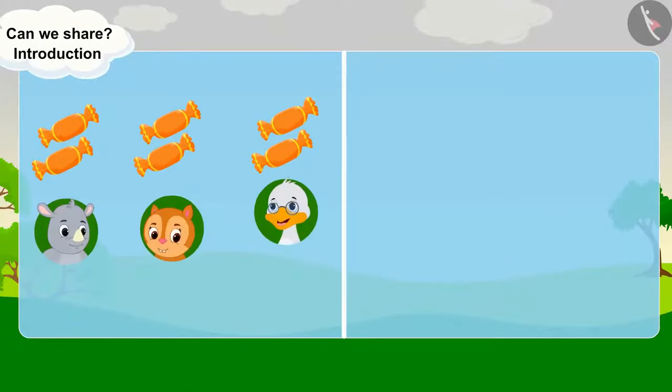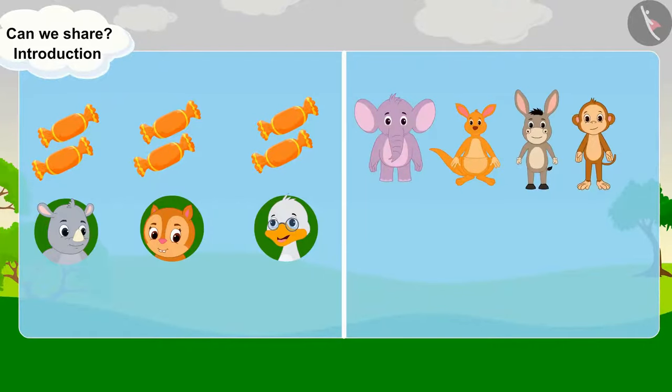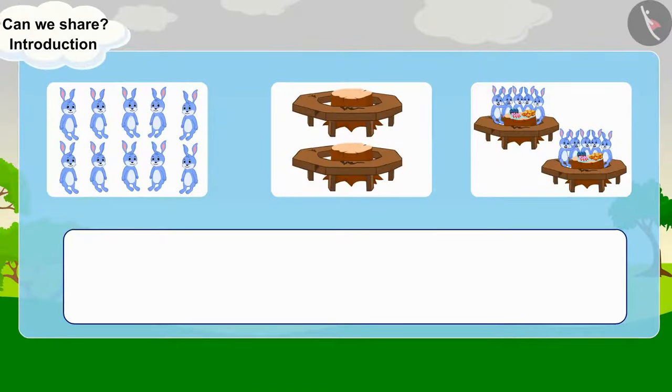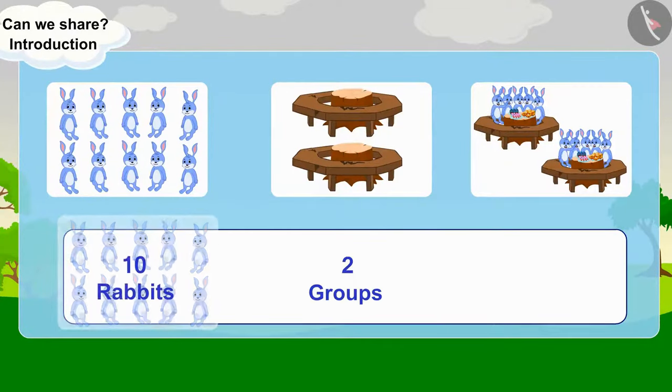Distributing things equally among people or making equal groups of people or things is called division. What are we doing here? Forming two equal groups of ten rabbits.